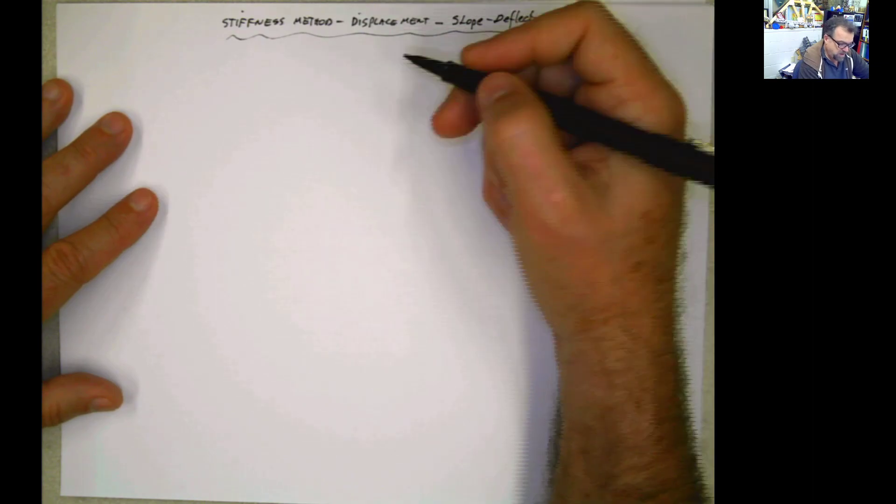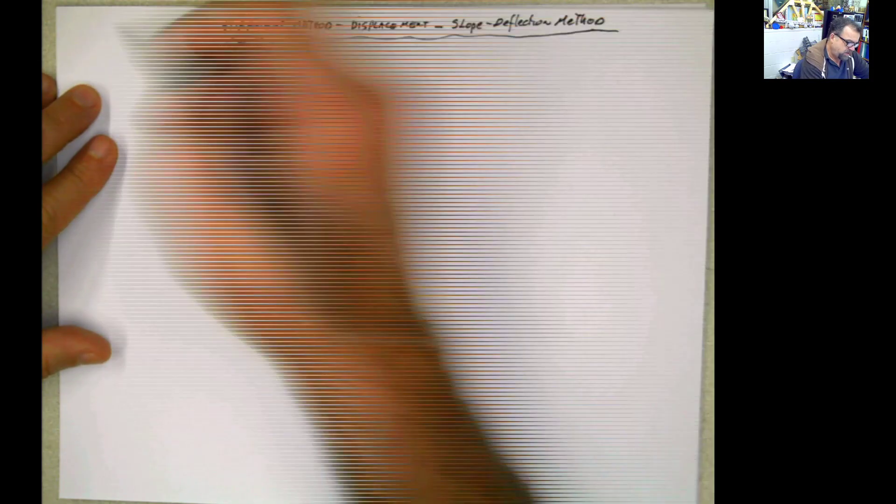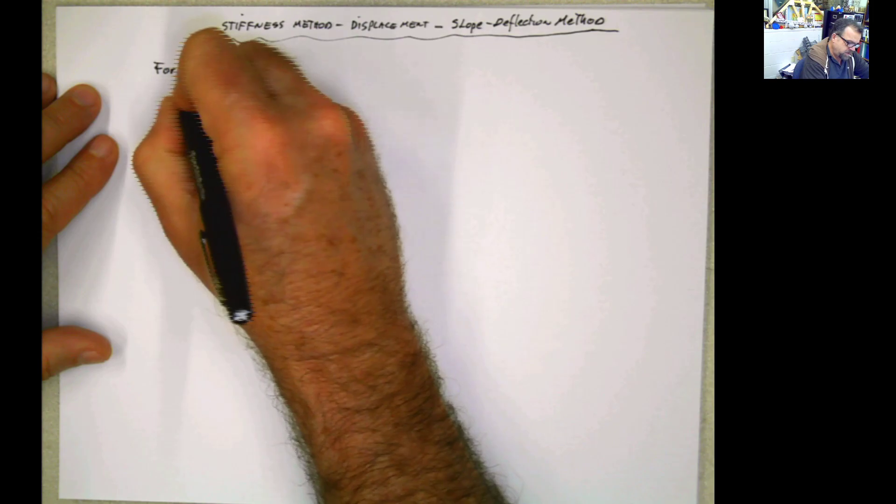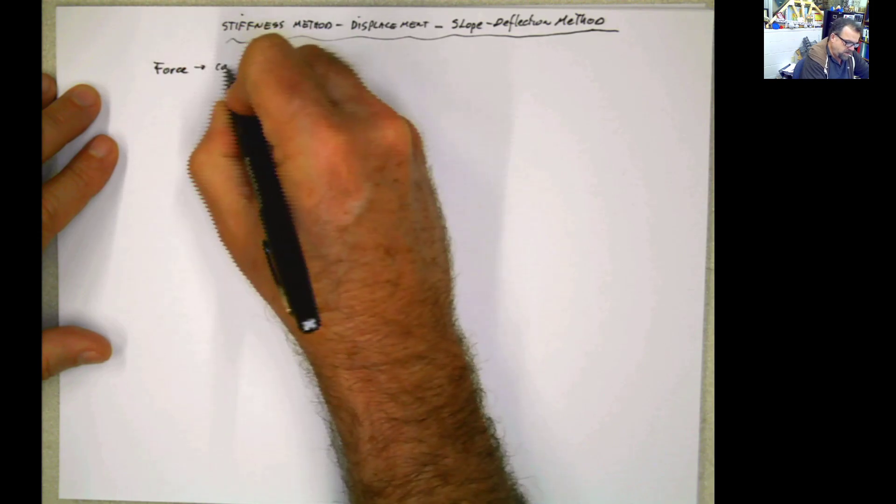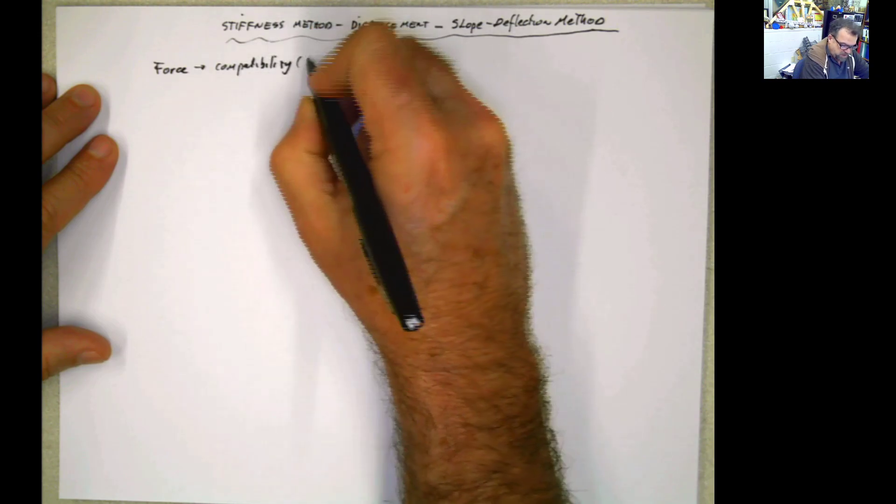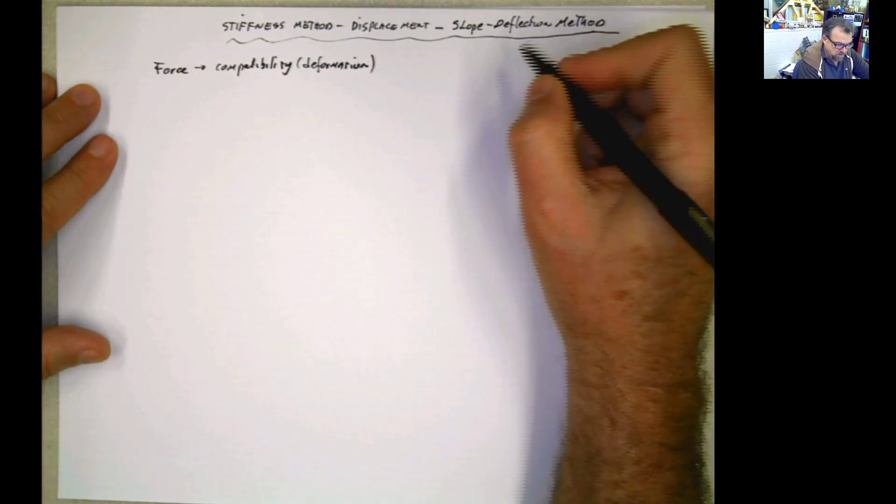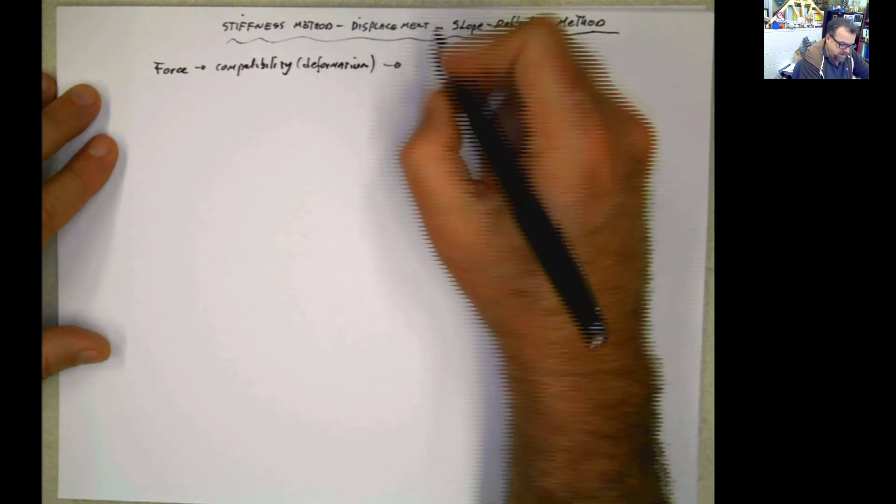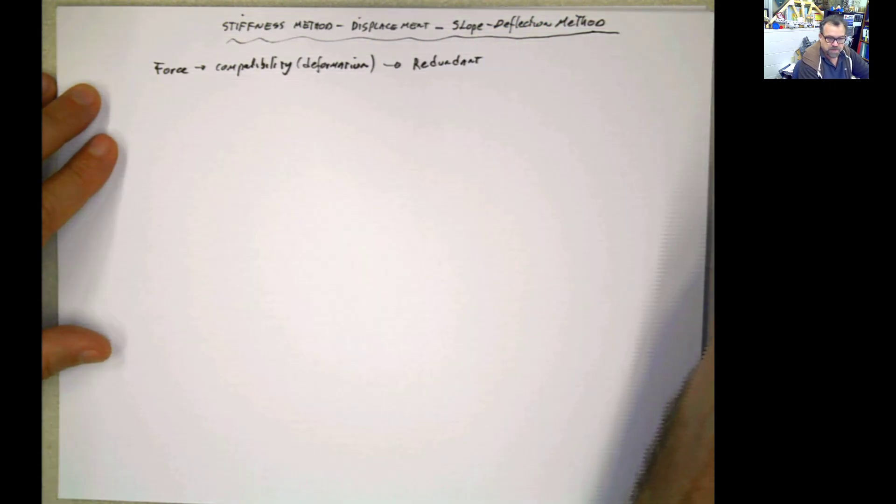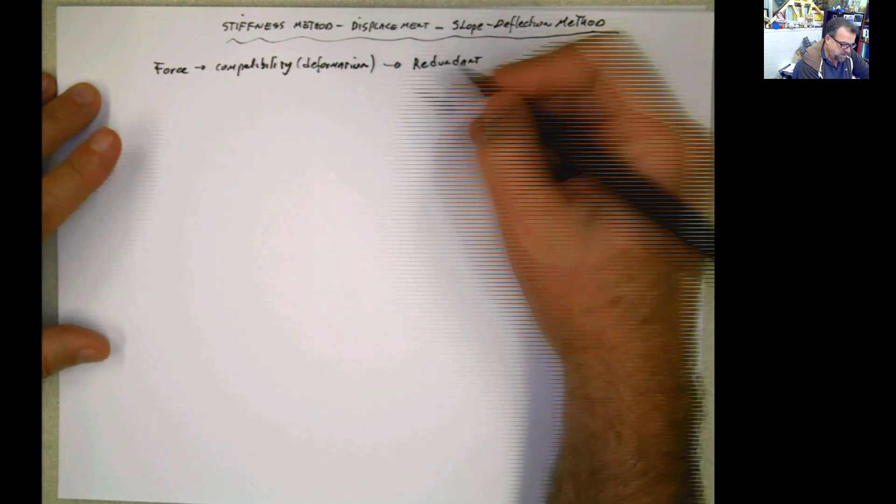In the previous chapter, or in the previous topics that we were dealing with, we talked about the force method. And the force method uses compatibility deformation equations in order to find the redundant forces in the system. The method of the displacement is the opposite of this.